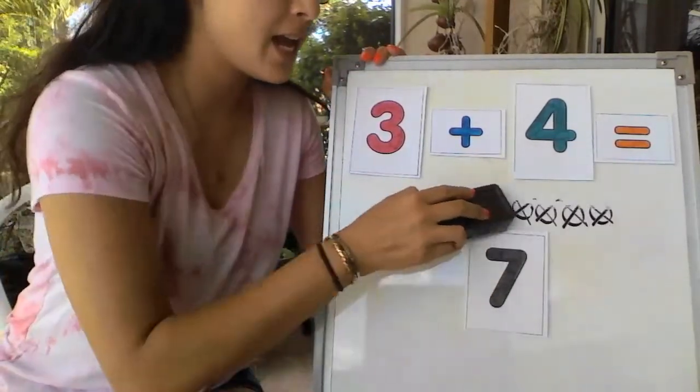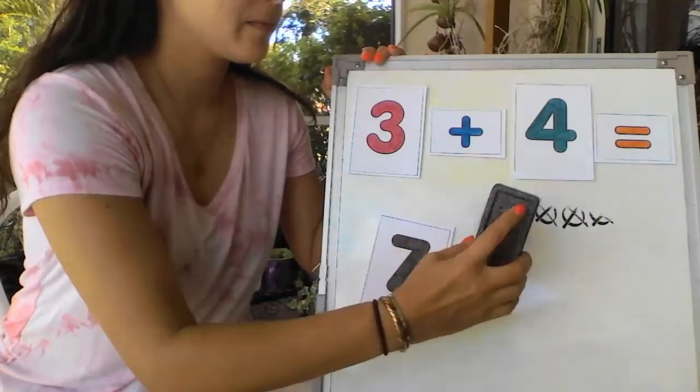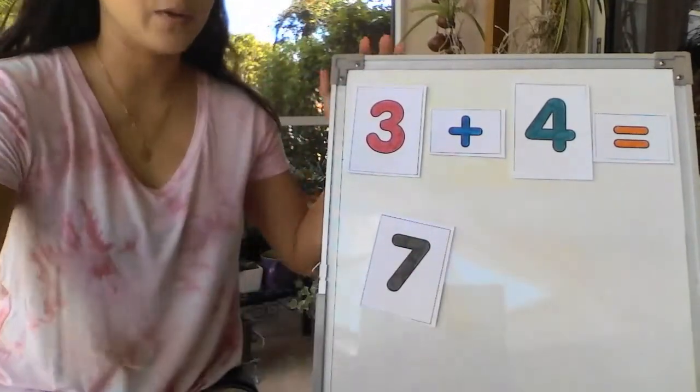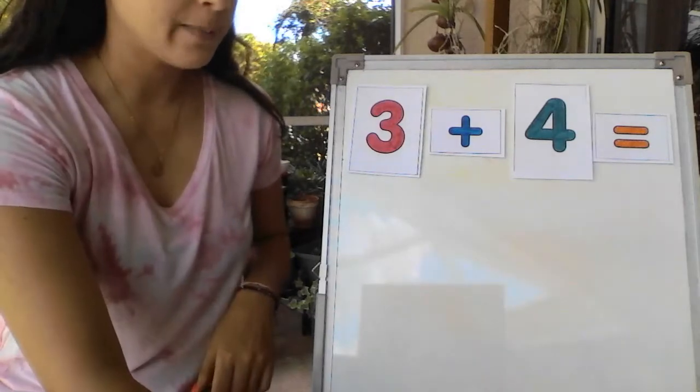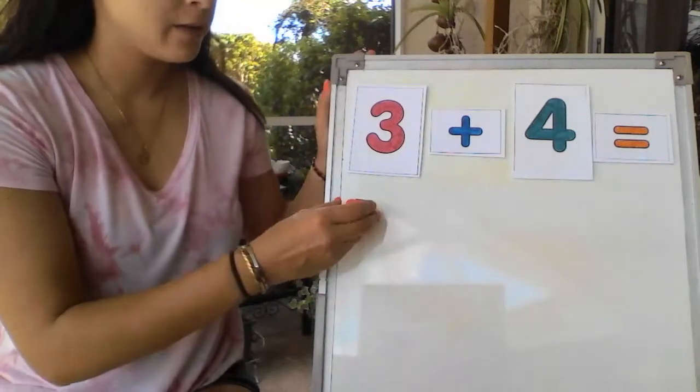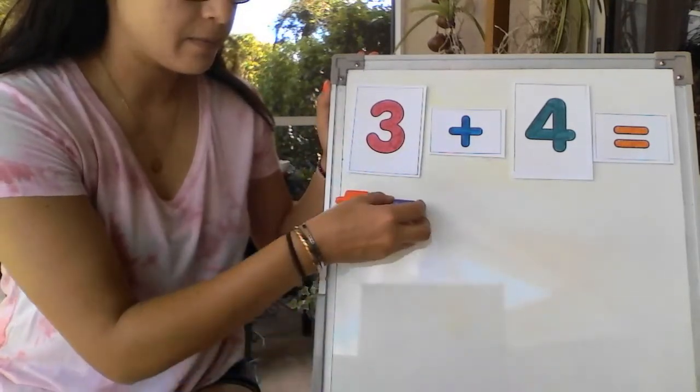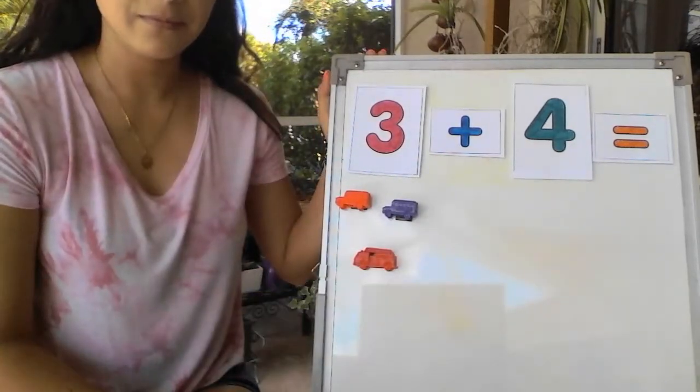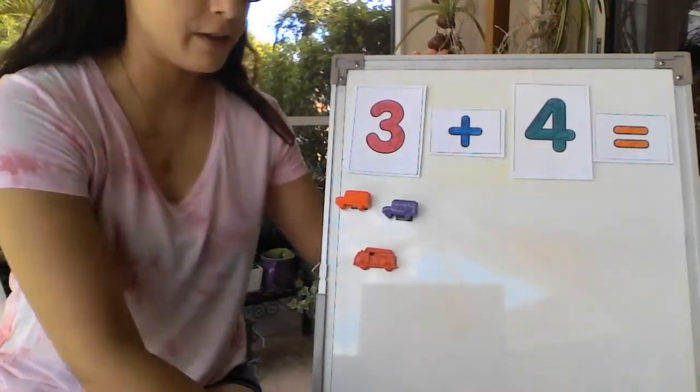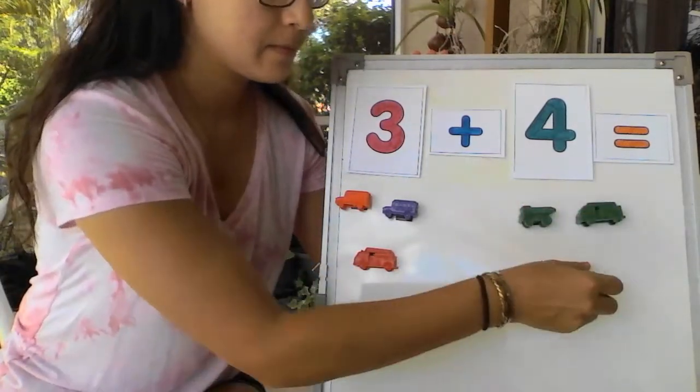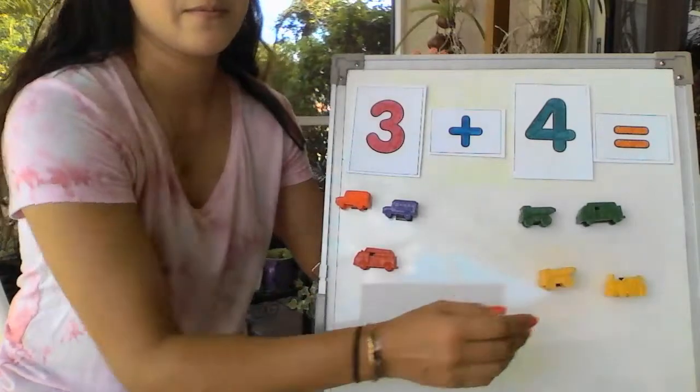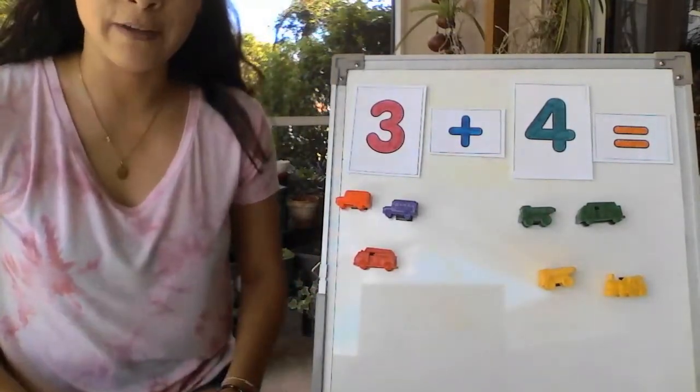Remember you can use anything you want. I'm going to be using my counting vehicles. So I'm going to put 3 vehicles on one side. And I'm going to put 4 vehicles on this side.